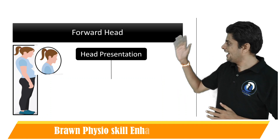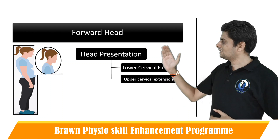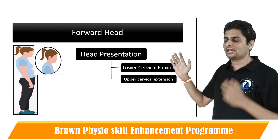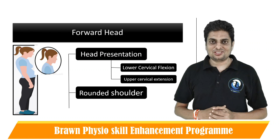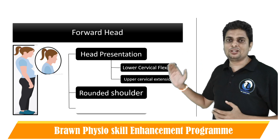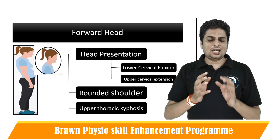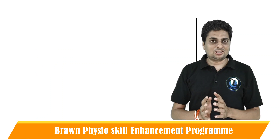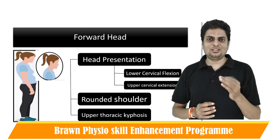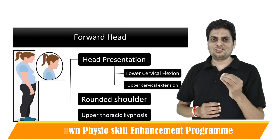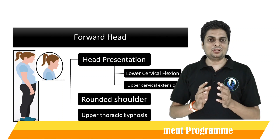The first factor is the head presentation itself, which includes upper cervical extension and lower cervical flexion. The second is upper thoracic kyphosis, and the third is rounded shoulder. These three factors are present in forward head presentation in different combinations in different individuals. We need to differentiate the exact combinations and understand how to intervene.